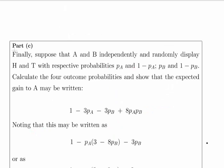Finally, this is the last part now. Finally, suppose that A and B independently and randomly display heads and tails with respect to probabilities PA and 1 minus PA, PB and 1 minus PB. So that's for heads and tails. And this is for heads and tails. Calculate the four outcome probabilities and show that the expected gain may be written as follows. So the expected gain to A may be written as that.